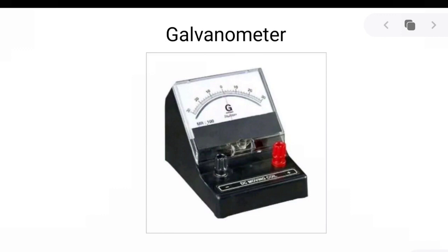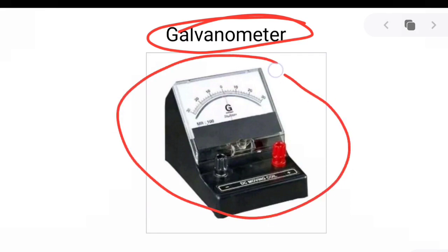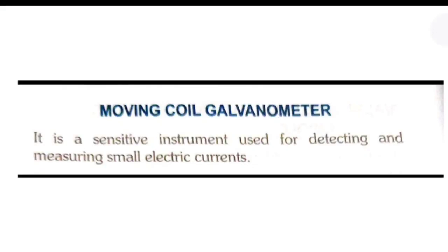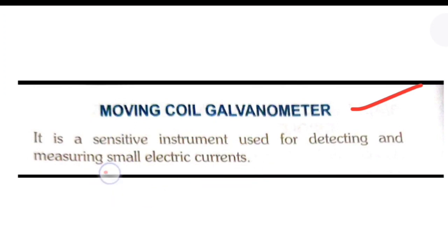The galvanometer is used in the meter bridge to determine the null point. In this video we are going to talk about the moving coil galvanometer. This galvanometer also works on the same principle, but this is the miniature form of what we are going to learn. The basic definition of a moving coil galvanometer is that it is a sensitive instrument used for detecting and measuring small electric current.